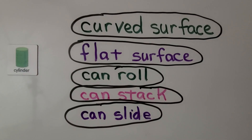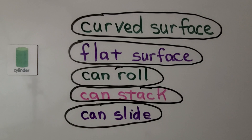So remember, a cylinder has a curved surface. It has two flat surfaces. It can roll on its curved side. It can stack to make a tower. And it can slide along its flat surface. Our next lesson, 10.5, we're going to identify, name, and describe cones. I hope you have a really nice day. I hope you hit the like button, and I hope to see you next time. Bye.